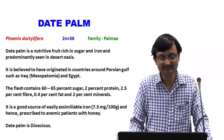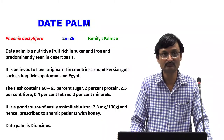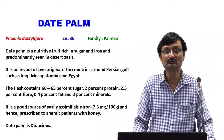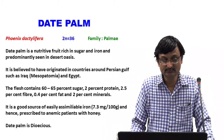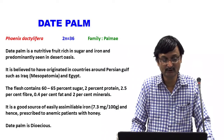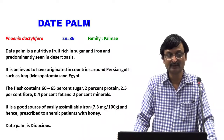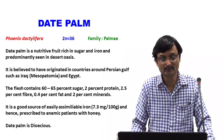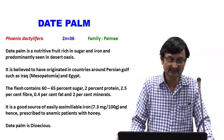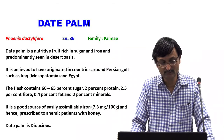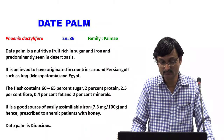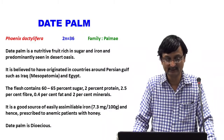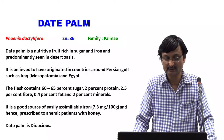Date palm botanical name is Phoenix dactylifera. Its chromosome number is 36. It belongs to the botanical family Palmae, also known as Arecaceae. Date palm is a nutritive fruit rich in sugar and iron, predominantly seen in desert oasis. The flesh contains 60-65% sugar, 2% protein, 2.5% fiber, 0.4% fat and 2% minerals. It is a good source of easily assimilable iron — 7.3 mg per 100g — and hence prescribed for anemic patients with honey.